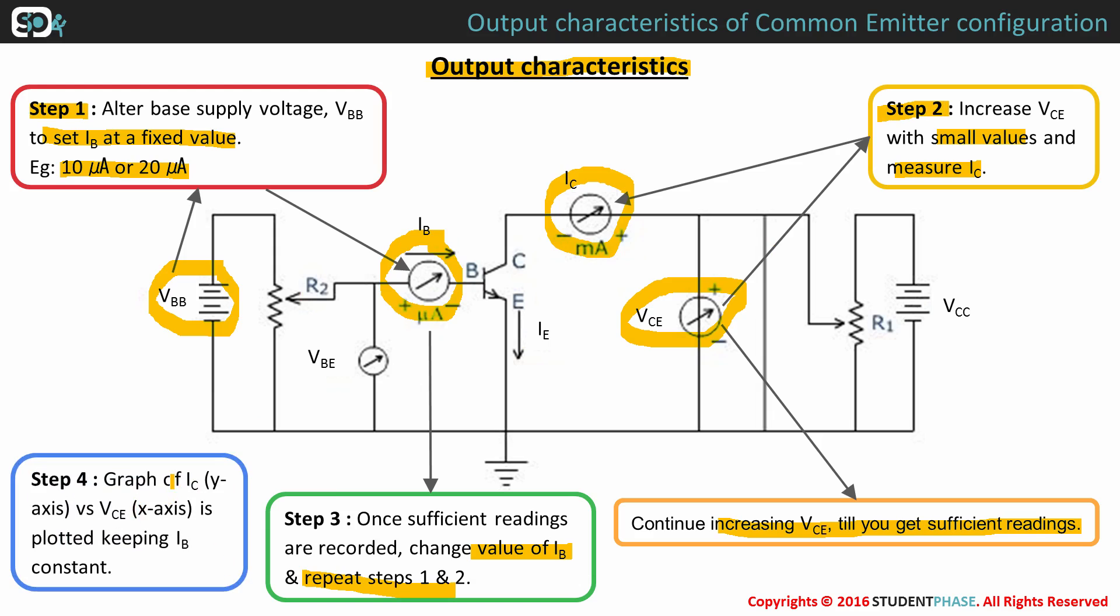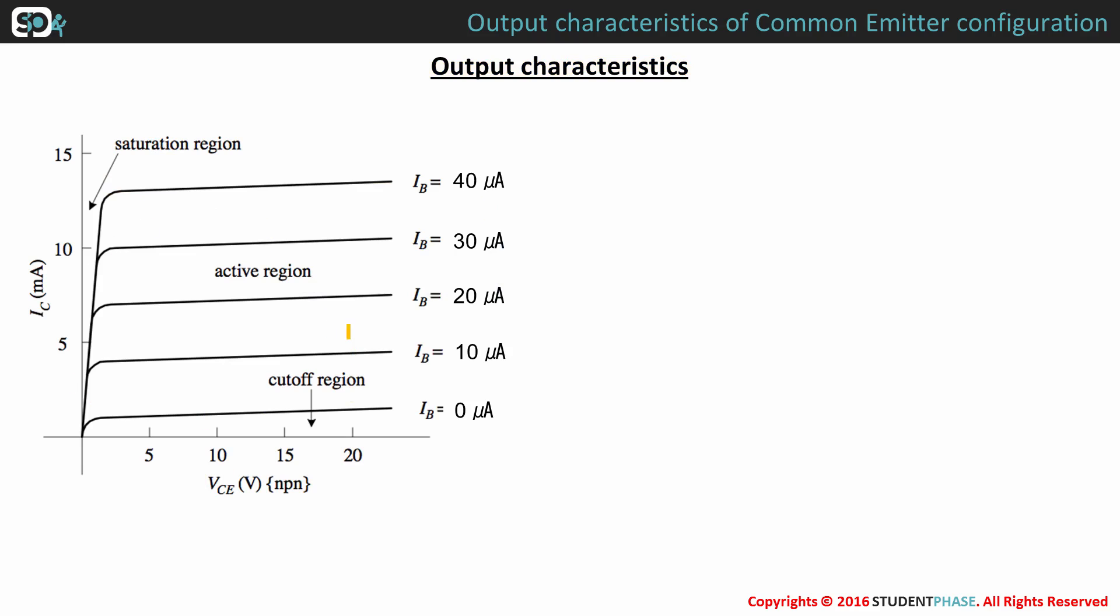Plot a graph of IC versus VCE keeping constant IB. The plotted graph may look something like this. Based on the observations, we can arrive at certain output characteristics.